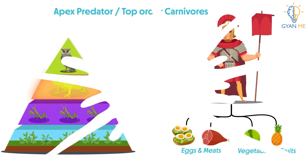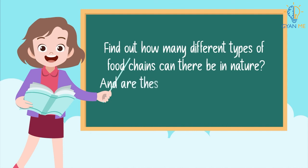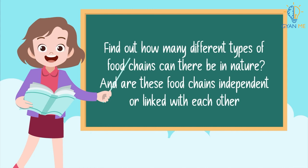Now students, let me give you one task. Find out how many different types of food chains can there be in nature. And are these food chains interdependent or linked with each other or are they independent of each other? Think a while or else we will answer these questions in our next video.